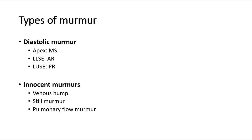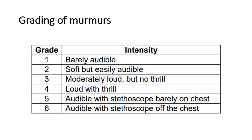Besides systolic and diastolic murmurs, innocent murmurs are also sometimes heard in children, so we should put it as a differential as well. Besides knowing the types of murmurs and their location, we also have to know about the grading of murmurs. There are six different grades, from softest to loudest.